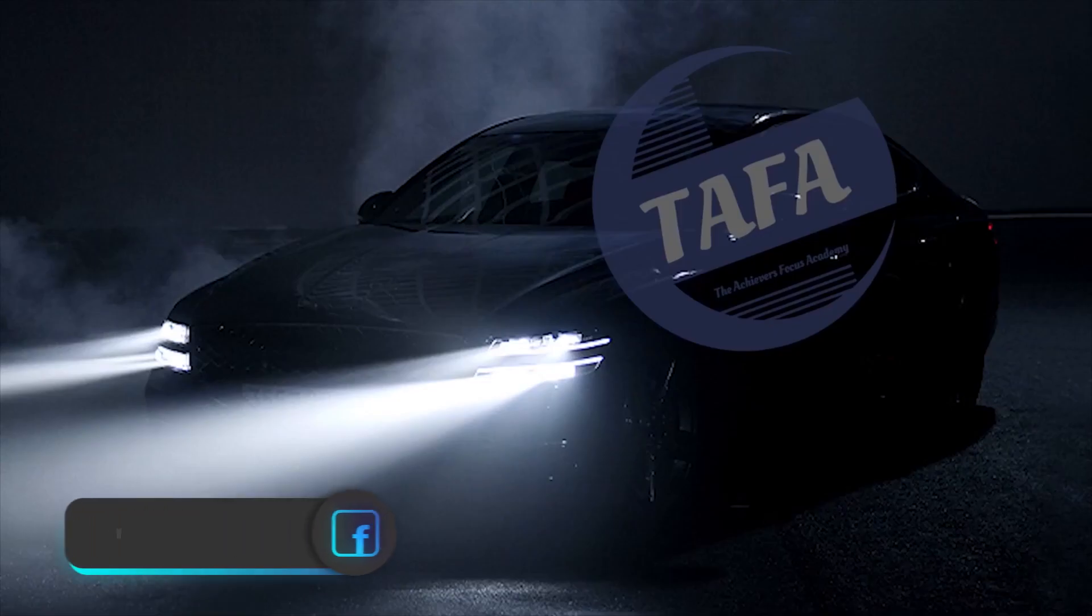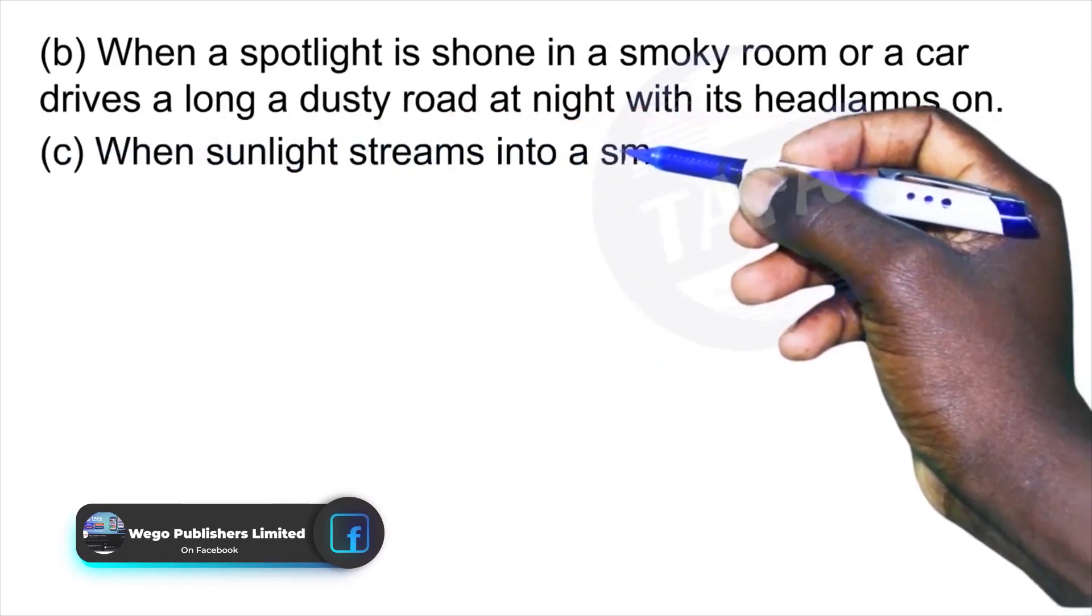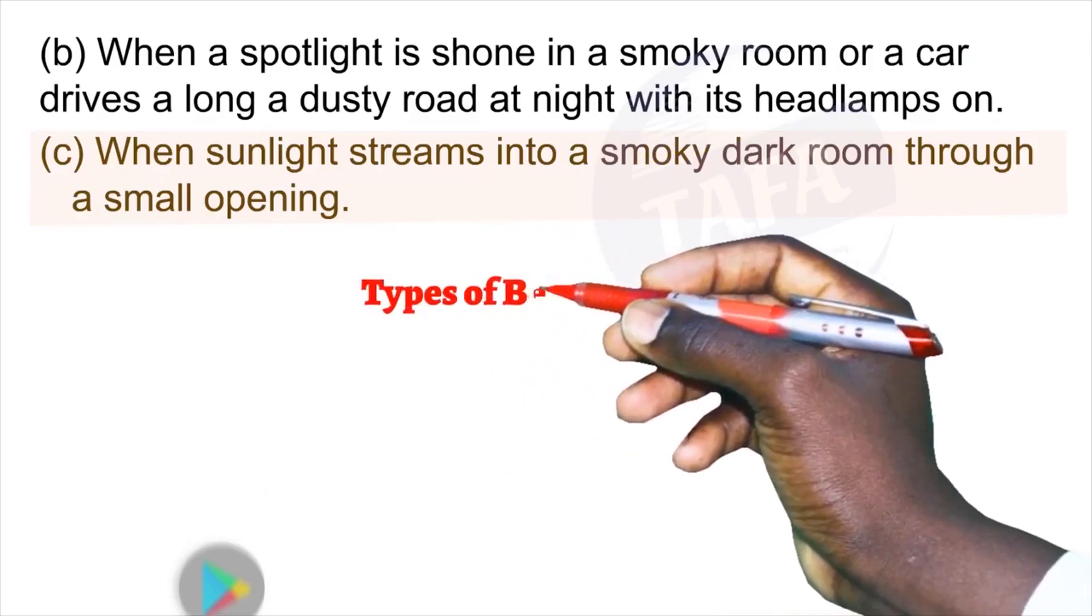Number three, when sunlight streams into a smoky dark room through a small opening. Types of beams of light.